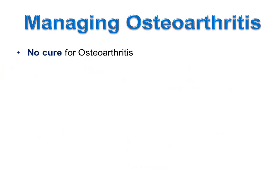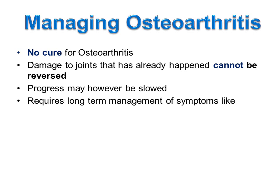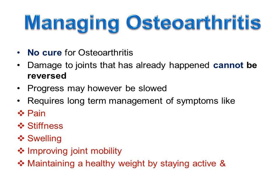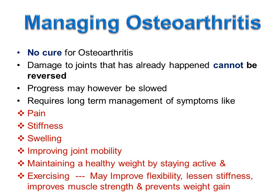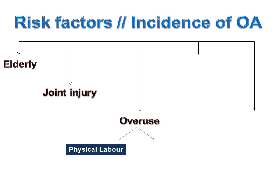There is no cure for osteoarthritis. The damage to joints that has already happened cannot be reversed, though the progress of osteoarthritis may be slow. Osteoarthritis requires long-term management of symptoms like pain, stiffness, and swelling, improving joint mobility, maintaining a healthy weight by staying active and exercising. Exercising may improve flexibility, lessen stiffness, improve muscle strength, and prevent weight gain. Risk of osteoarthritis increases with age. However, osteoarthritis can also occur in young people because of joint injury or overuse caused by physical labor or sports.